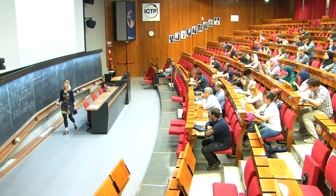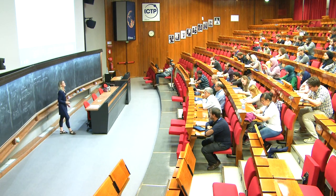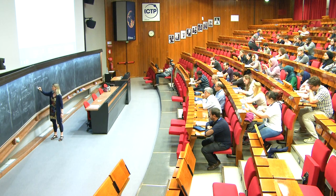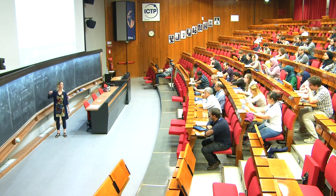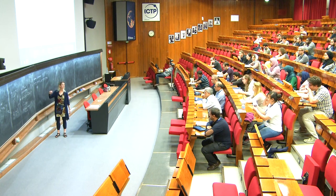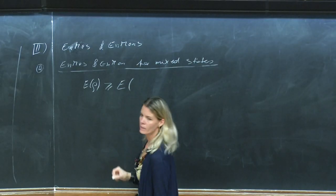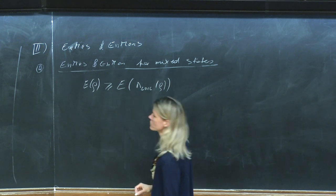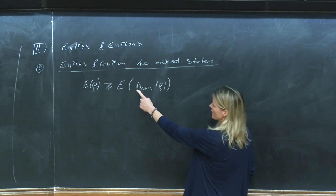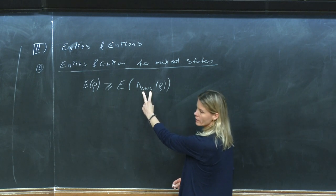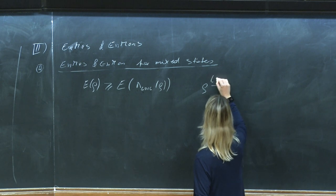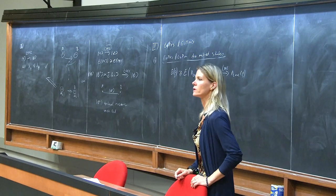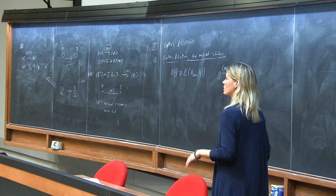We started with the definition of entanglement measures and monotones for mixed states. What is an entanglement measure? We have it for mixed states: E of rho cannot increase under any completely positive map that is realizable with an LOCC protocol. So rho goes to Lambda_LOCC of rho via LOCC. Whenever this is possible, our measure cannot increase. Any entanglement measure is non-increasing under LOCC.